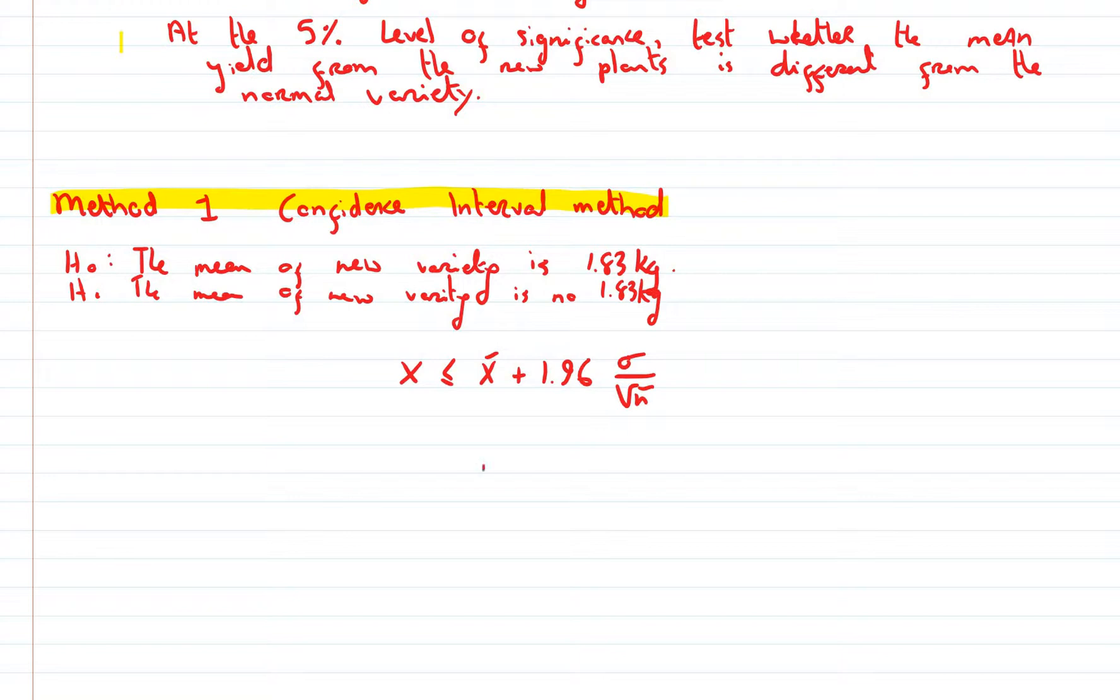So on this side, our mean plus 1.96 times the standard error, and then on this side, our mean minus 1.96 times the standard error.